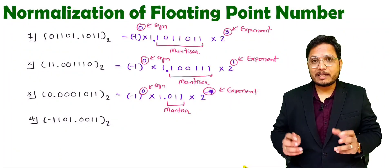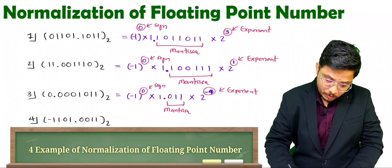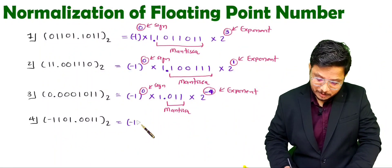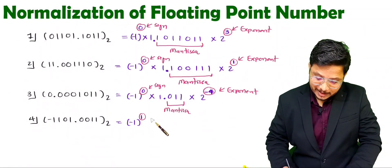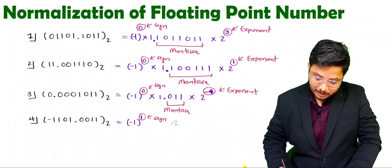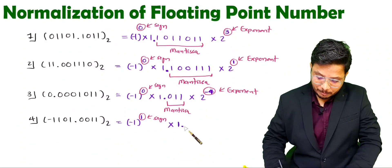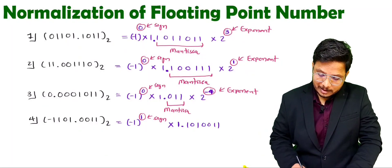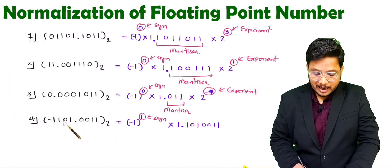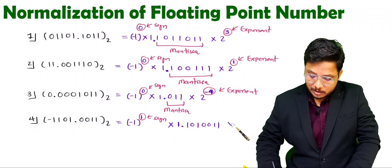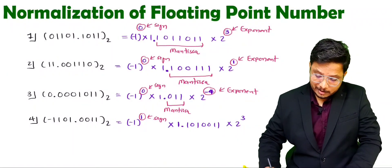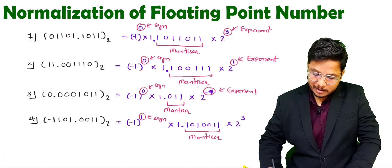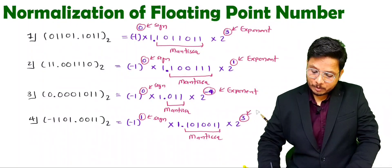Let us have one more question. In the fourth question, minus is there — minus means minus 1 to the power 1. So this 1 is the sign, then into 1 point something we need to represent the number. So 1 point 1 0 1 0 0 1 — that is how it is. By how many bits are we shifting towards the left? 1, 2, 3 — so 2 to the power 3. So 1 0 1 0 0 1 is the mantissa, and 3 is the exponent.